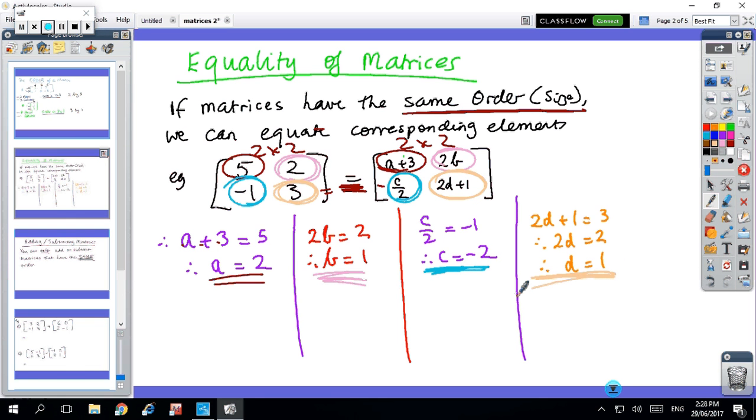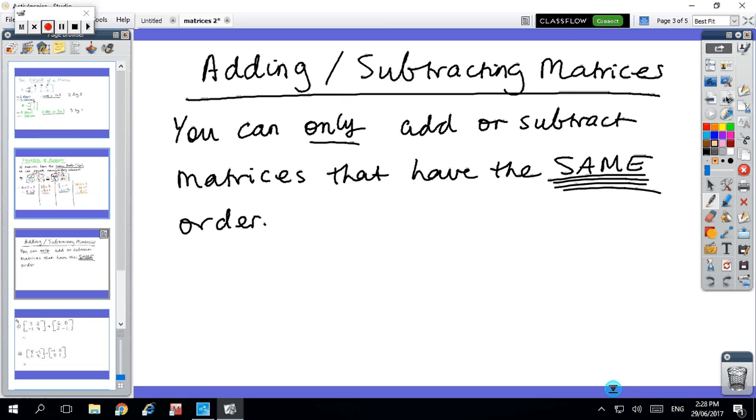So there's a little bit of algebra, and there might be questions in the book. But basically, once you've got the same order, you can look at corresponding elements. Now we're up to adding and subtracting matrices. This can only be done if they have the same size. So if you've got a 2x2 and you're adding a 2x2, that's okay. But if you've got a 2x2 and you're trying to add a 2x1, you can't do it because they're not the same size.